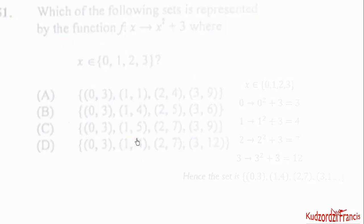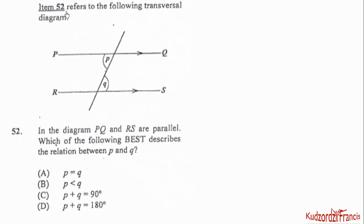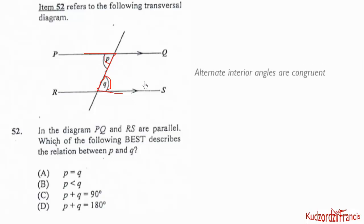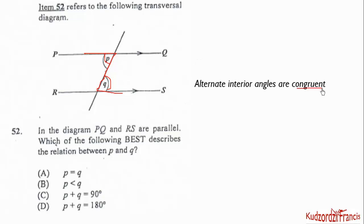Now let us look at item 52, which refers to the following transversal diagram. PQ and RS are parallel lines. Which of the following best describes the relation between angle P and angle Q? If we trace a Z-shape, we can see P and Q in the interior corners of the Z — these are called alternate interior angles. Alternate interior angles are always congruent, meaning they are equal. Therefore P equals Q, and the first choice is the correct answer.